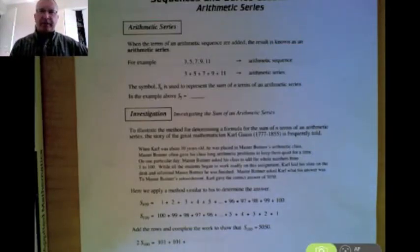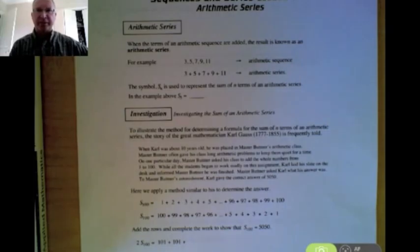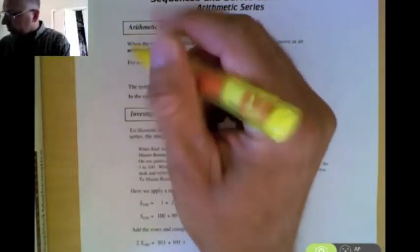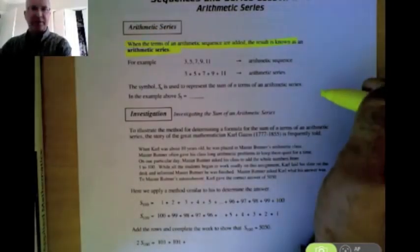In the last couple of videos we've been looking at sequences. In the last video we looked at something specific called an arithmetic sequence. Now we're going to look at something slightly different called a series. And basically what an arithmetic series is, is when the terms of an arithmetic sequence are added together.